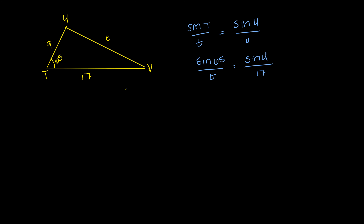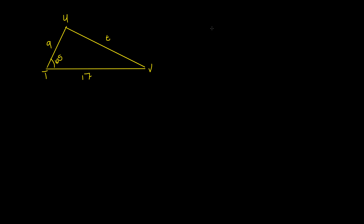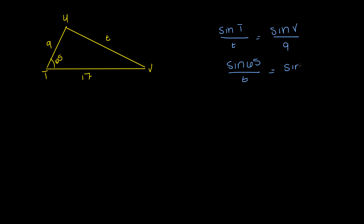Maybe if I go back and do sine of T, which is 65, divided by t, equals sine of V divided by 9. So this is sine of 65 divided by t equals sine of V divided by 9. Again, I still have two variables that I need to solve for, so that doesn't help me either.